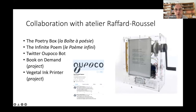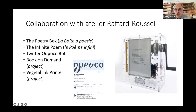We also work with a group of artists called the Atelier Raffa Roussel — two artists — and they have produced what you can see on the right of the screen: the poetry box. It's really a box, a kind of tool that you can carry and show in different locations, in museums or in libraries. It's also a fun object so that you can produce poetry by just turning the wheel on the side of the object. It's a way to have interaction with people and have children, for example, interact and look at the system. We also have things on Twitter — the Twitter UpoCobots that produce four verses every six hours — and different projects like Book on Demand and the Vegetal Ink printer from the Atelier Raffa Roussel.